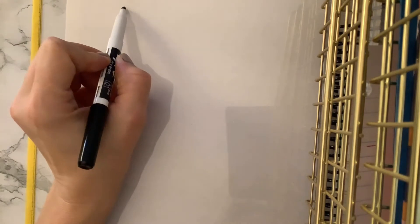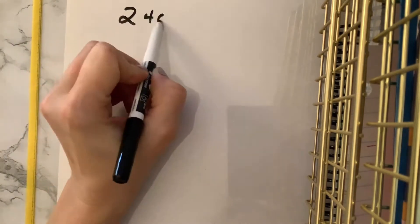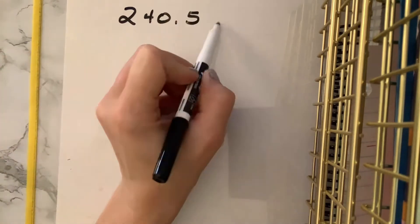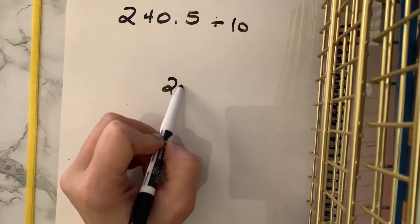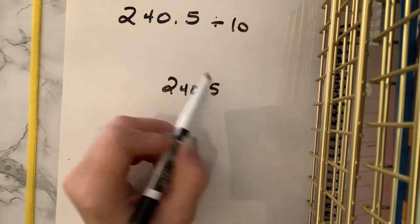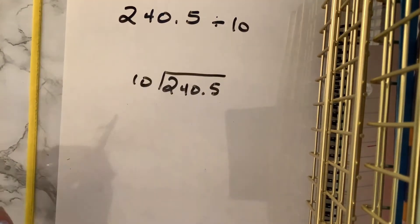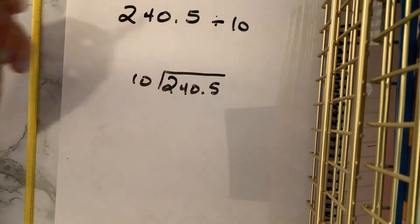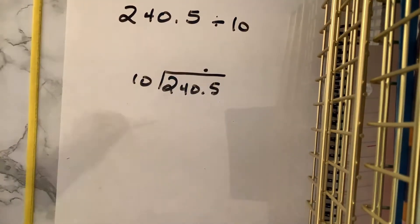If you're thinking ahead, you might have some ideas — you know what happened with multiplication, and this is the inverse operation. So maybe you can make some educated guesses about what's going to happen. Let's say we're doing 240 and 5 tenths divided by 10. We're not going to do this using long division ultimately, but I want to show us where we're at. With our rules of division, we always want to line up the decimal point in our dividend and our quotient.